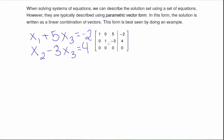Since the pivots are in columns 1 and 2, we tend to solve for x1 and x2. So x1 equals negative 2 minus 5x3, x2 equals 4 plus 3x3, and x3 is our free variable.